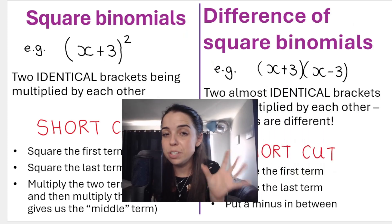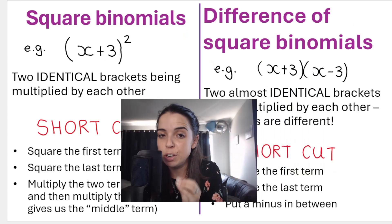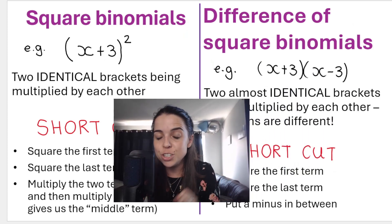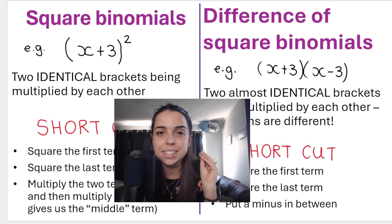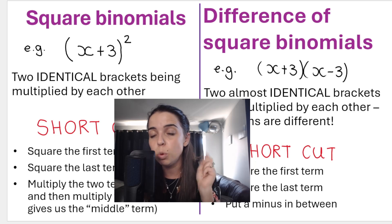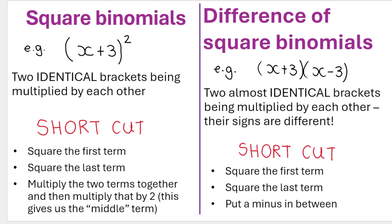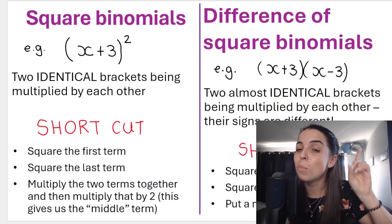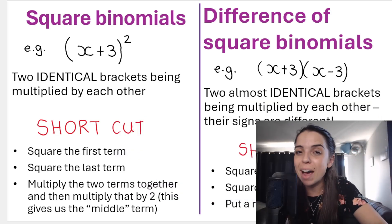So here's a summary of the different types of binomial times binomial and the shortcut methods for each. Don't confuse the shortcut methods, study it properly. But if you use it correctly and you know exactly how to use it, these will be very useful in the future. Check out the next video in the playlist for more algebra. I'll see you very soon. Bye everyone.